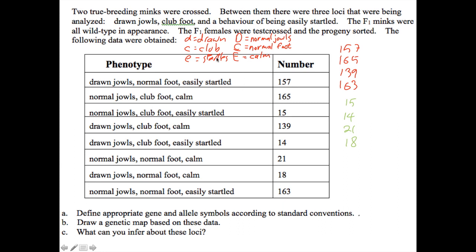So to do this, we'll use these gene symbols and we'll place them like this. And you'll notice that 157 is drawn, normal feet, and easily startled. Drawn, normal foot, easily startled. That's how you read these.